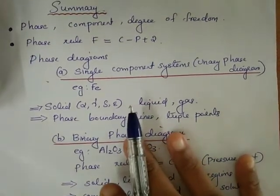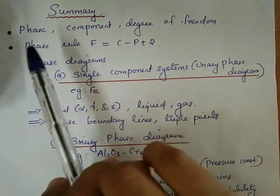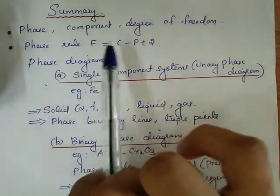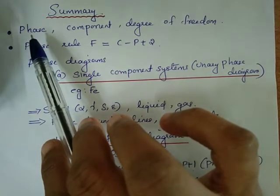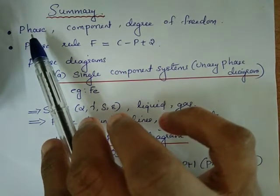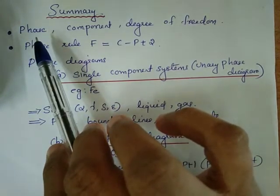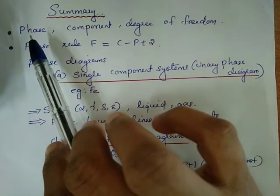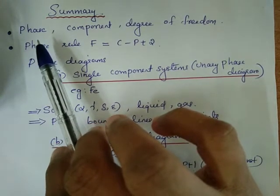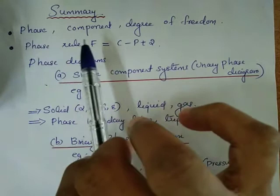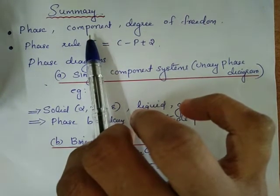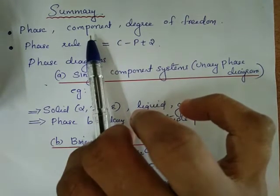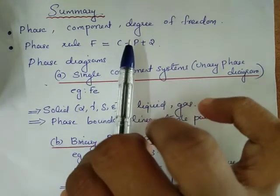Here is a summary. First, we explain the concepts of phase, component, and degree of freedom. A phase is a chemically homogeneous and physically distinct part of a system that is mechanically separable. It represents a state of matter. A component represents the elements or species defining the system. Degree of freedom refers to the number of variables that can be independently changed.